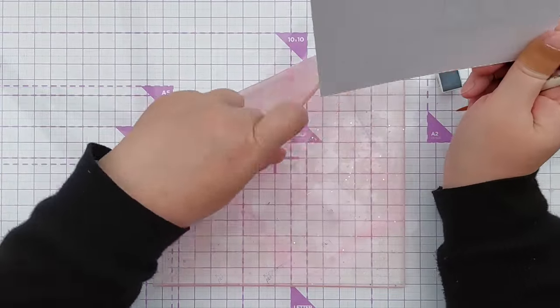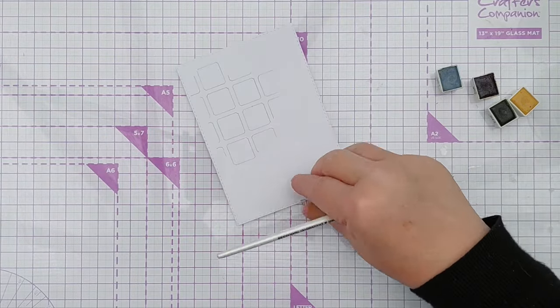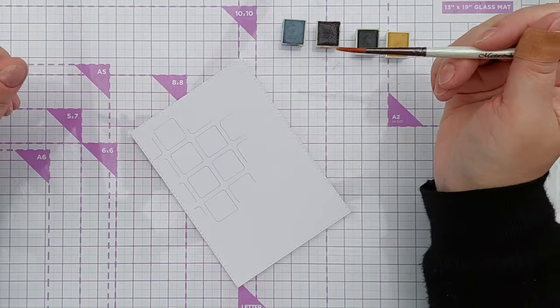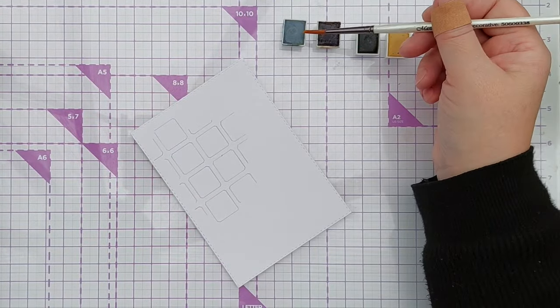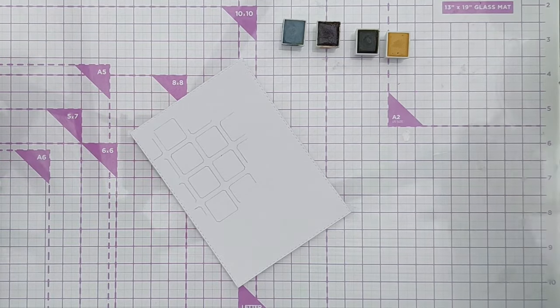I'm going to take this off the grip mat because I want to be able to maneuver it, I like to be able to swivel my paper when I'm watercoloring. For my colors I've chosen a warm grey, a brown, an olive green and a yellow ochre.